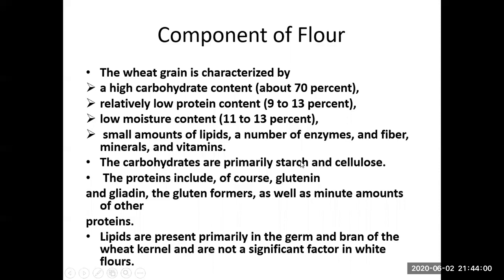The proteins in flour include glutenin and gliadin — two kinds of protein that combine to form gluten. These two proteins mix together to form the gluten present in flour. As for lipids, they are primarily found in the germ and bran of the wheat kernel and are present in only very small amounts — they are not a significant factor in wheat flour.